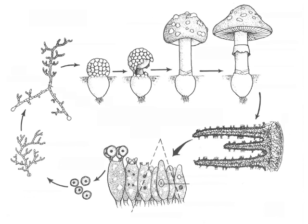That mycelium that's under the ground is, for the most part, a dicaryon. That means that it has two haploid nuclei per cell, and the mushroom — most of what you see of the mushroom — is also a dicaryon. So it's before those two nuclei have fused at fertilization or made spores by meiosis.